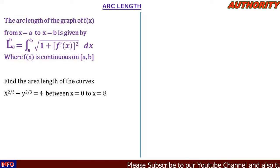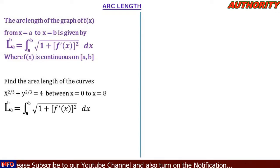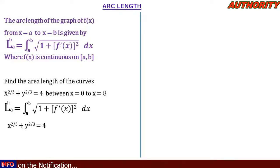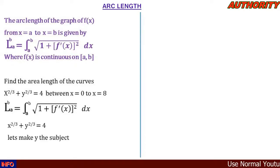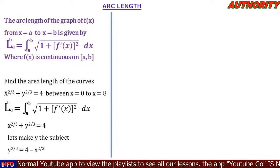The formula we are going to use is the integral from a to b of square root of (1 + [f'(x)]²) dx. The curve given is x^(2/3) + y^(2/3) = 4. From this curve we can make y the subject. Taking x^(2/3) to the other side, we get y^(2/3) = 4 - x^(2/3).